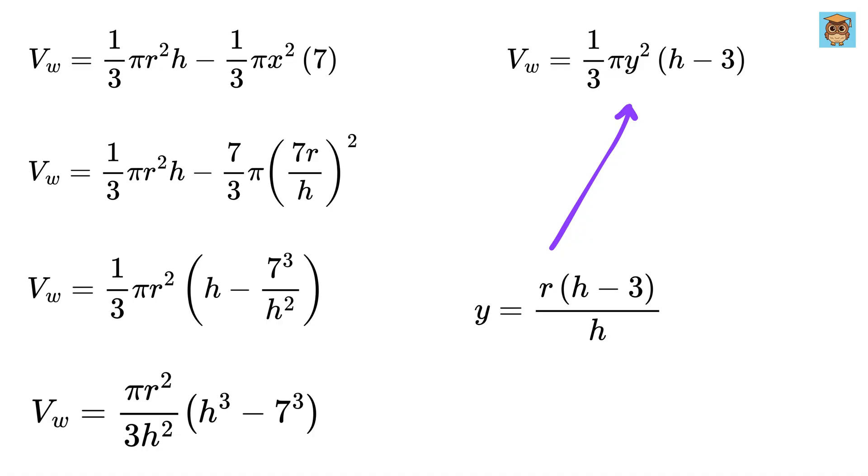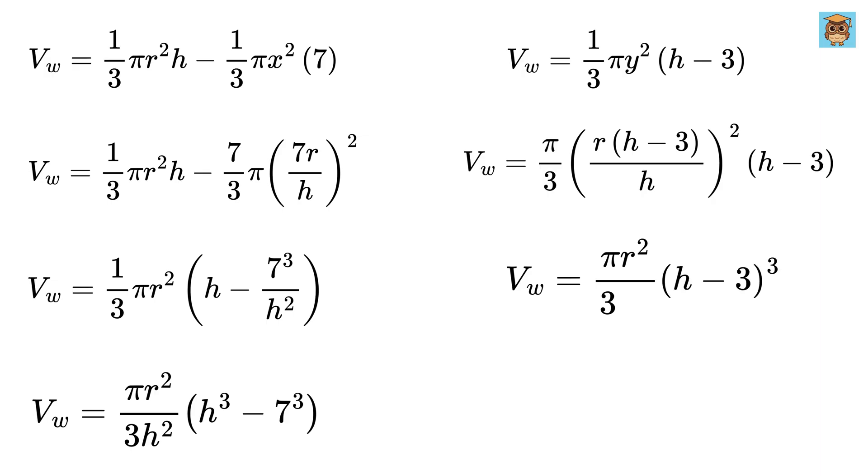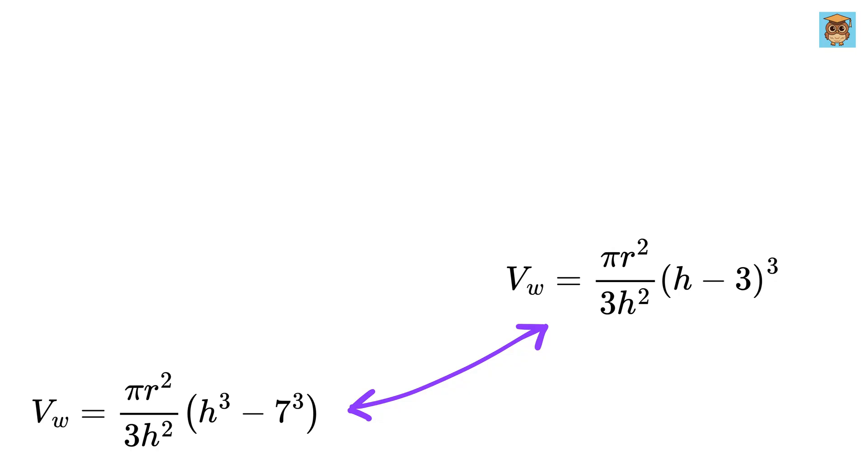Now, substitute Y squared here to get this, which will become pi R square over 3 times H minus 3 whole cube over H square. Now, we will equate both the volumes because the amount of water inside the cone stays the same before and after flipping, as we are not adding or removing any water during flipping. So, we get this equation.